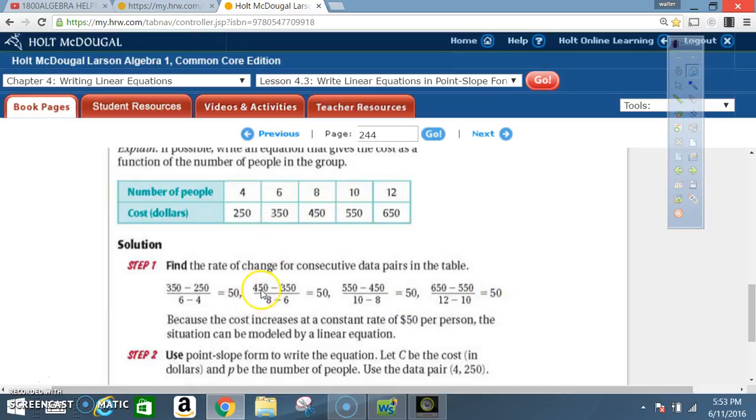So, when I go here, so it says 450 minus 350. Now, this becomes my Y2, and this becomes my Y1. This becomes my X2, and this becomes my X1. When I get here, this becomes my Y2. This is my Y1. This is my X1, and this is my X2. When I get here, this 650 becomes my Y2. This becomes my Y1. 12 becomes my X2, and 10 becomes my X1. And notice, my rate of change is the same all the way through. 50, 50, 50, and 50.